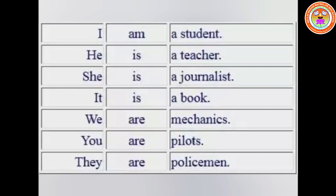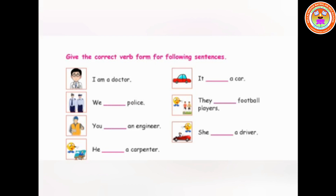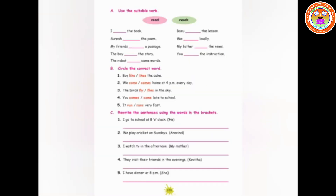We have already learnt be verb rules. For example: 'I am a student.' 'He is a teacher.' 'She is a journalist.' 'It is a book.' 'We are mechanics.' 'You are pilots.' 'They are policemen.' So: I → am; he, she, it → is; we, you, they → are. Keep these rules in your mind. Complete the book back exercise, take a photocopy, and share it with your English teacher.